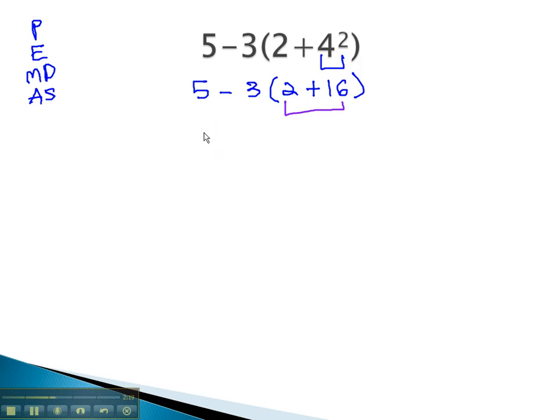So now our problem reads 5 minus 3 times 18. Now that the parentheses are done, we work down the order of operations. There's no exponents, but we do have multiplication. We will multiply the negative 3 times the 8, which is negative 54.